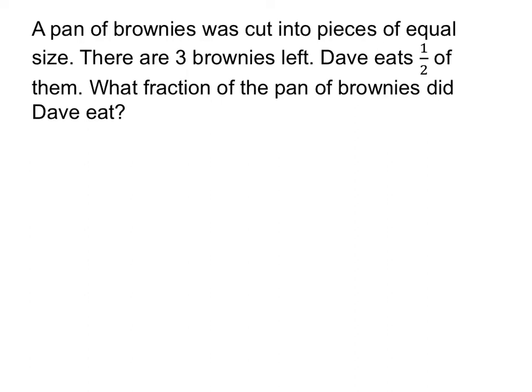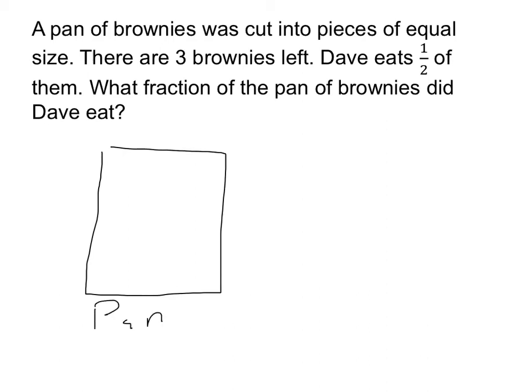Let's draw a picture. We start off with the same pan of brownies, cut into pieces of equal size. We don't know how many pieces there are, but we know there are three brownies left. David eats half of them, so we take those three pieces, divide them into two equal pieces, and eat one of those pieces. There are the brownies that he ate.